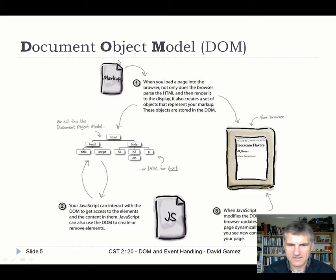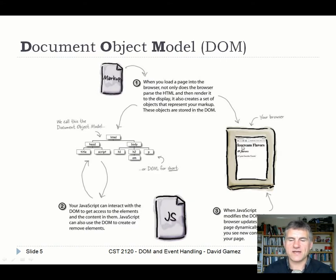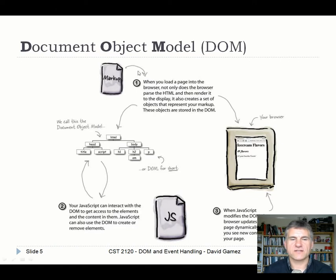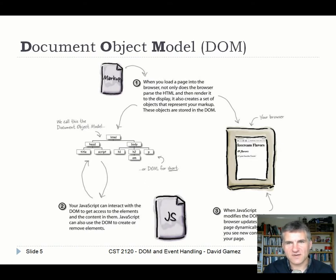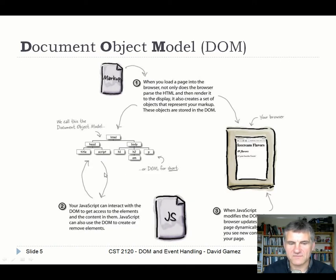So the general structure is: we write a bunch of HTML with some CSS, the browser loads that up, and it generates two things. Firstly, it generates a graphical representation — what you actually see when you look at the web page. At the same time, it generates the Document Object Model, which is a computer representation of what's going on in that HTML. JavaScript isn't interacting directly with the pixels on screen; it's interacting with this computer representation, the DOM.